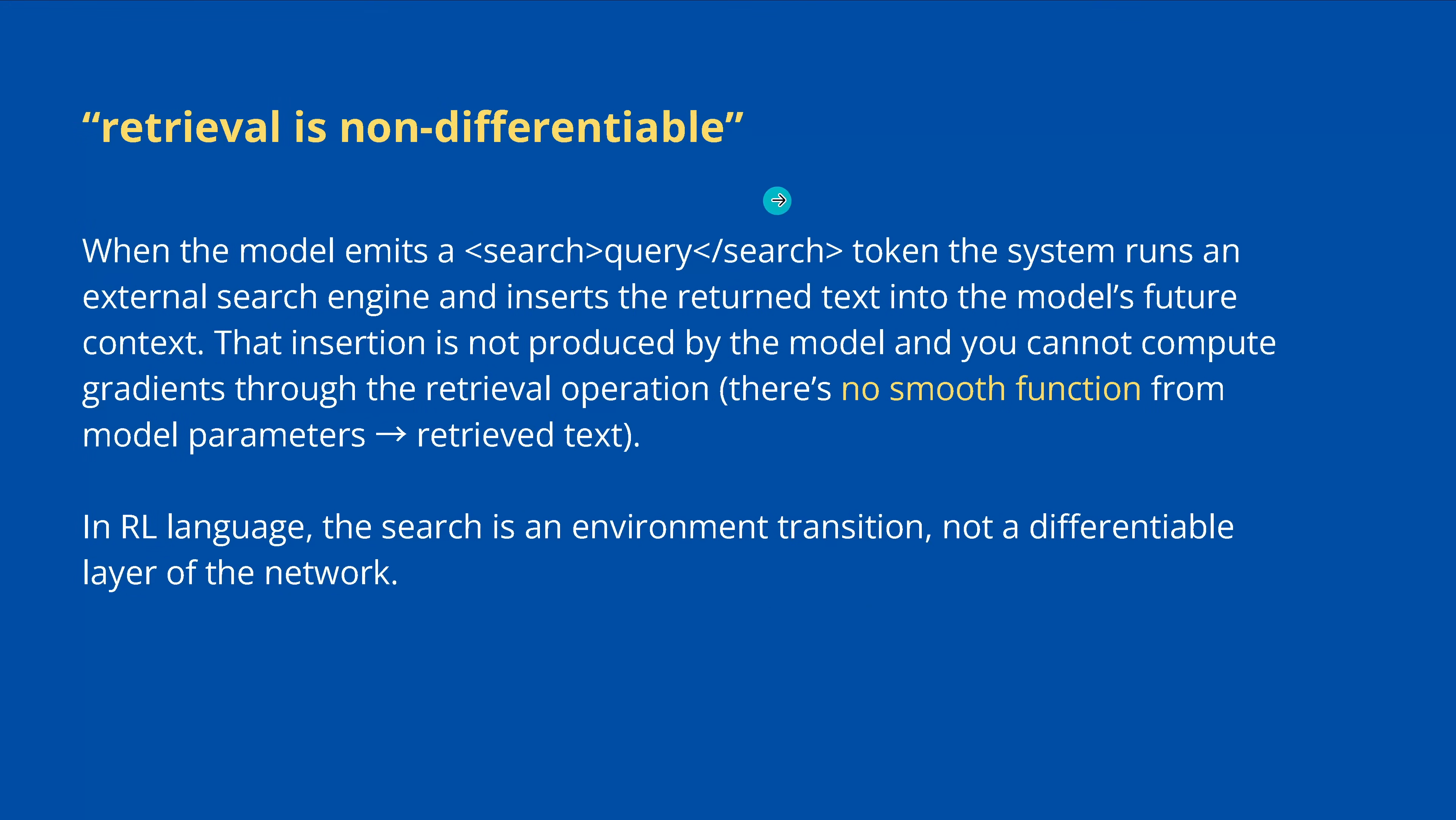Now, if you say, what does it mean, non-differentiable? Here you have the simple explanation. Whenever the model emits a search end of search token, the system runs an external search engine and inserts the returned text into the context. But this insertion is not produced by the model, and so you cannot compute the gradient through the retrieval operation. There's no smooth function from the model parameters to the retrieved text. So, therefore, in RL slang language, we say, the search is now an environment transaction, not a differentiable layer of the network.